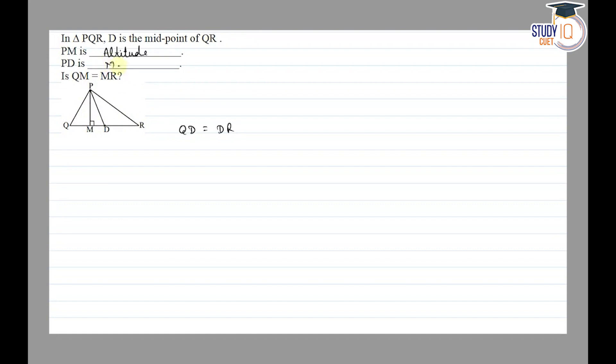So here PD is a median in triangle PQR. The question asks: is QM equal to MR? Since D is the midpoint of QR, we need to consider where M is located.